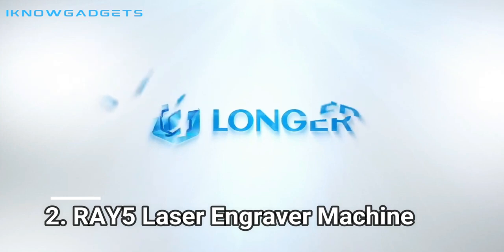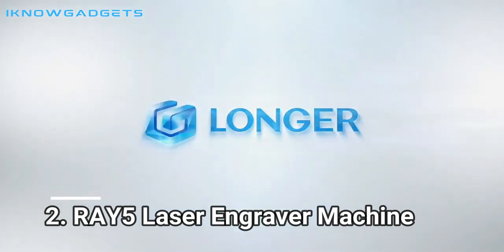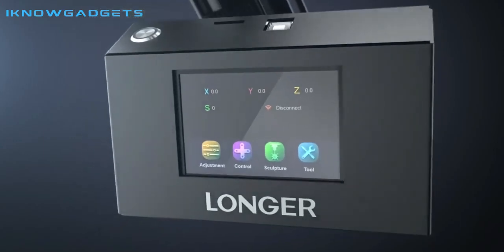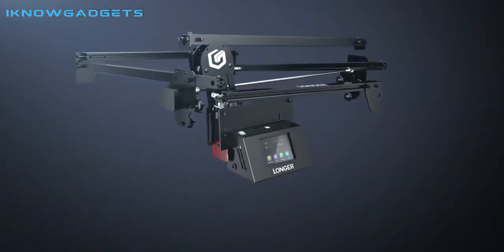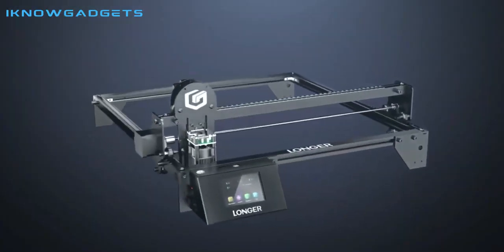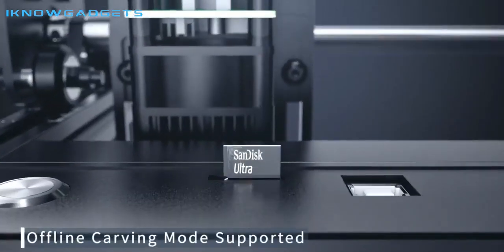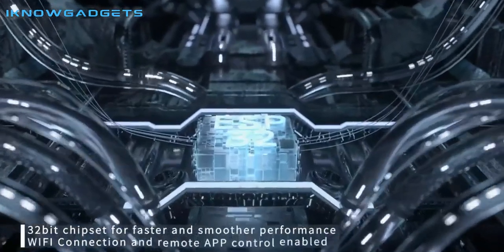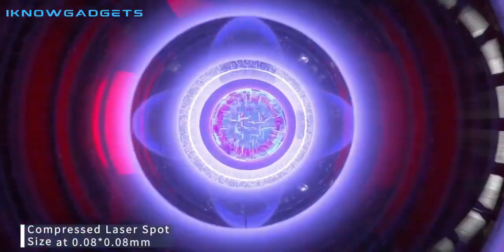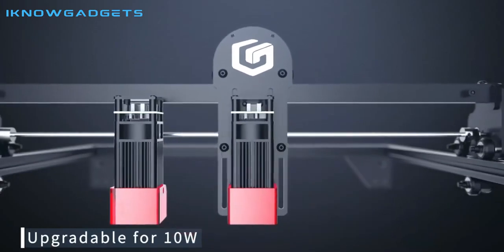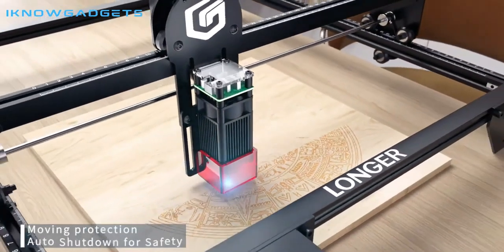Number 2. Ray 5 Laser Engraver Machine. The Ray 5 Laser Engraver Machine is a great option for anyone looking for a powerful and convenient laser engraving and cutting experience. With its 32-bit chipset, WiFi connectivity, and 3.5 inch smart color screen, it's easy to use and operate. Its powerful 5W laser module and ultra-fine laser dot size of 0.08x0.08mm make engraving and cutting faster and more precise.